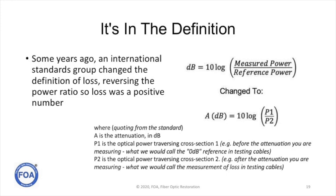Some years ago, an international standards group changed the definition of loss, reversing the power ratio so loss was positive number. Instead of dB equal 10 log measured power over reference power, they changed it to A, attenuation, and dB equals 10 log P1 over P2, where P1 is basically the reference power and P2 is the measurement power. So when you define it that way, loss has now become a positive number.